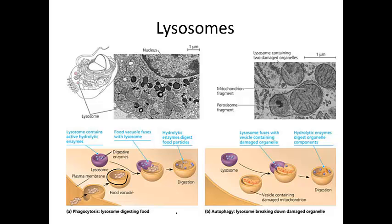Lysosomes, sometimes called the digestive system of the cell, contain hydrolytic enzymes for digesting material. That could be material coming into the cell to be eaten as food, or it could be damaged parts of the cell that the lysosome will break down. One interesting fact: like a tadpole's tail — when the tadpole loses its tail and becomes a frog, the tail doesn't just break off. It actually gets digested by the lysosomes inside the frog cells.